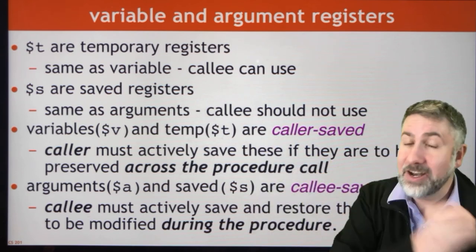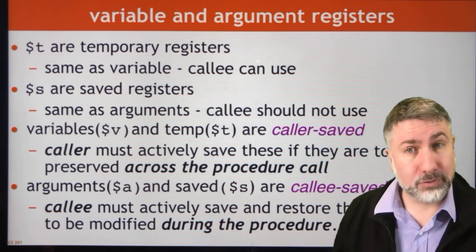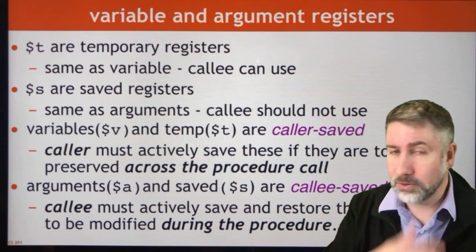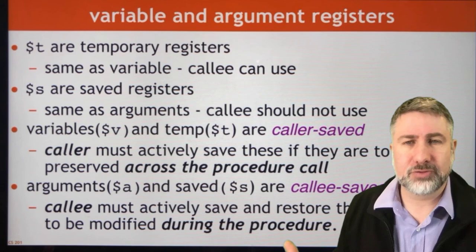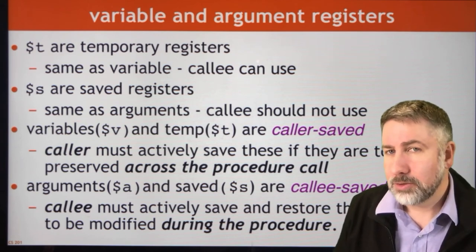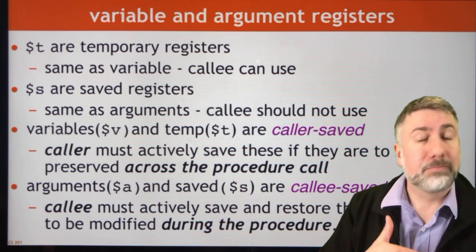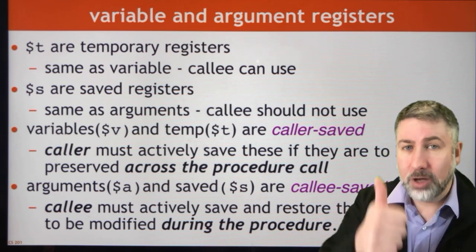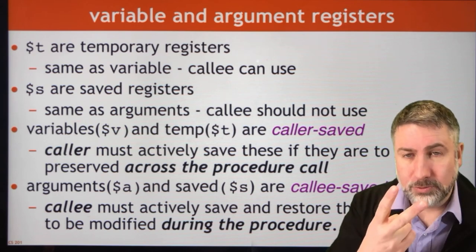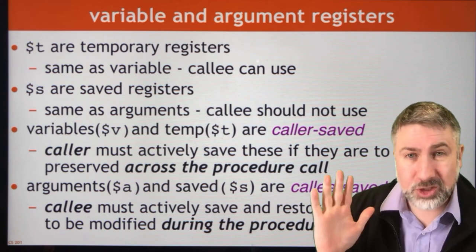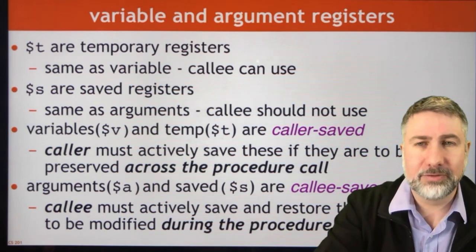Either you have to save the return address in another register, in which case you're going to run out of registers really quickly, or we have to do something else. In the next set of videos we'll look at some higher-level details of more general procedures for calling subroutines. Register parameters, arguments, and return values for subroutines are good enough for most simple subroutines that do not require nested subroutines and do not require more than four arguments or two return values. In general though, we'll need a few more details and that's what the next videos will be about.